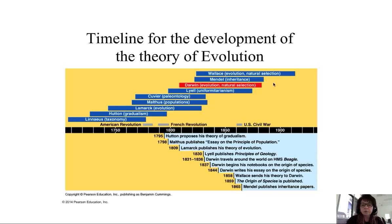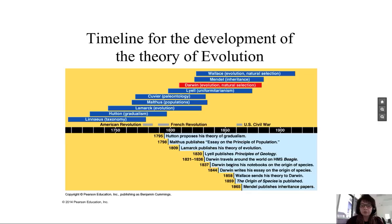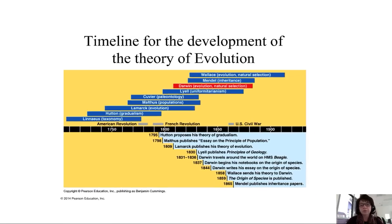Wallace has been getting much more credit recently. Darwin received a manuscript from Wallace that actually described many of Darwin's own ideas about evolution and natural selection. Darwin panicked — his wife urged him to publish everything he'd been writing in his notebooks. The very next year after receiving Wallace's letter, Darwin published his book. Darwin's notebooks predate Wallace's work, but Wallace independently arrived at a similar idea and deserves credit for that.